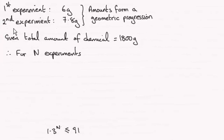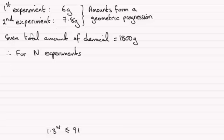Hi there. Now for this question, we're told that Sarah uses 6 grams of chemical in the first experiment, 7.8 grams in the second experiment, and so on. The amounts form a geometric progression.